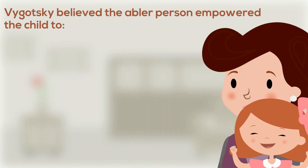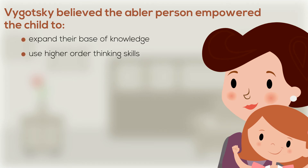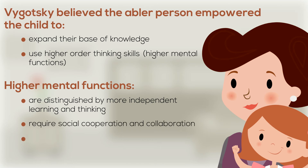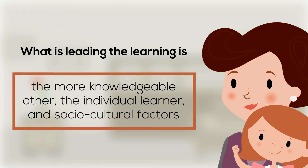Vygotsky believed the abler person empowered the child to expand their base of knowledge and use higher-order thinking skills, thus higher mental functions. These functions are distinguished by more independent learning and thinking on the part of the learner, and require social cooperation and collaboration to promote cognitive development and ability. What is leading the learning is a combination of the more knowledgeable other, the individual learner, and sociocultural factors.